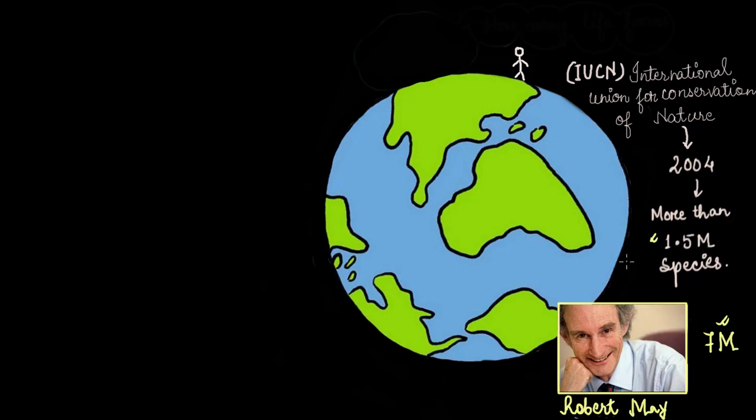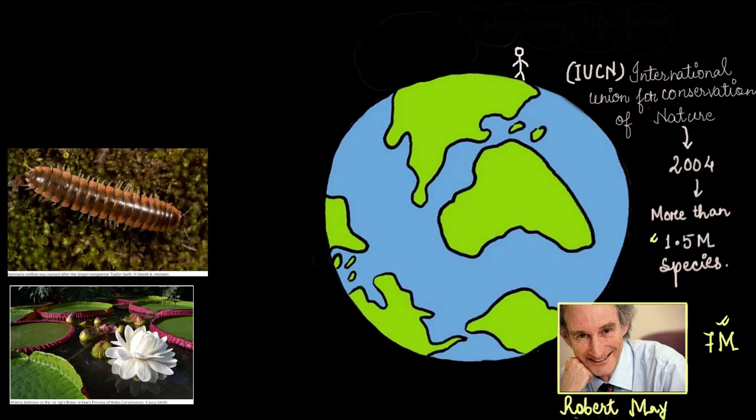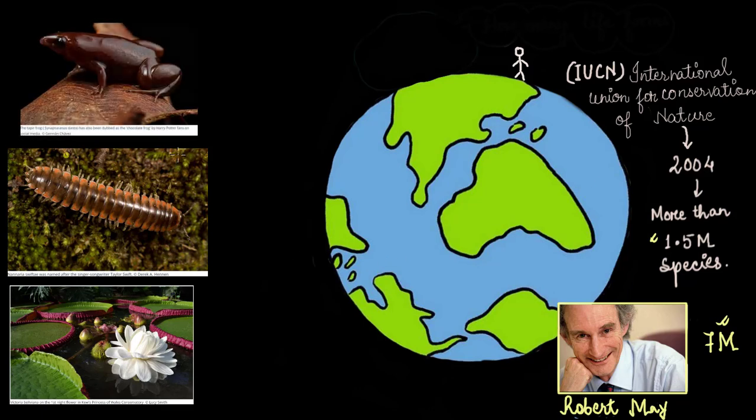Just out of curiosity, I looked up for species discovered this year, till August 2022. I found out that the world's largest lily was discovered only this year in Bolivia. Then a new species of millipede was discovered in USA and named after Taylor Swift as Nannaria swiftae. A frog was discovered called the Teper frog in Peru, famous on social media as the chocolate frog from Harry Potter. You can always Google about new discoveries. Just to boost your curiosity, there are some even discovered from India this year.